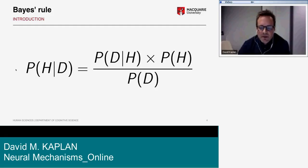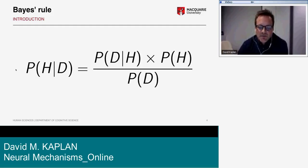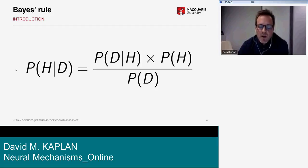Bayes rule states that the probability of a hypothesis given the data — the posterior P(H|D) — equals the likelihood P(D|H) times the prior P(H), divided by the probability of the data P(D). The latter just ensures the resulting probabilities sum to one. Bayes rule alone doesn't specify how an agent's beliefs or percepts should generate a decision. Bayesian decision theory specifies how to use the posterior distribution to generate a decision and requires a loss or utility function specifying the expected loss for each action.